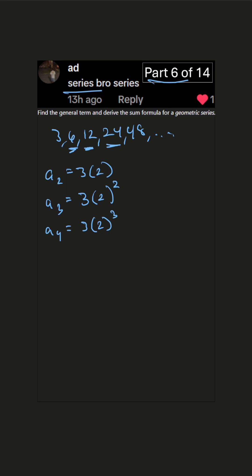And that gives us the general term a sub n. So any term in the sequence, we could pick a sub 1 million if we wanted to, equals a sub 1, which is just the first term, times r